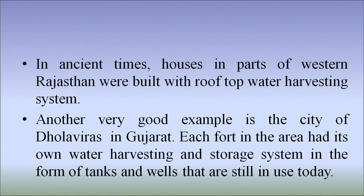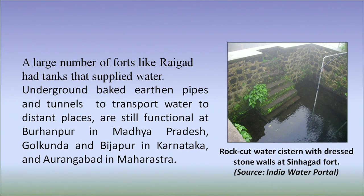In ancient times, houses in parts of western Rajasthan were built with rooftop water harvesting systems. Another very good example is the city of Dholavira in Gujarat. Each fort in the area had its own water harvesting and storage system in the forms of tanks and wells, and they are still being used today. A large number of forts, like Raigarh, had tanks that supplied water. Underground baked earthen pipes and tunnels to transport water to distant places are still functional at Burhanpur in Madhya Pradesh, Golconda and Bijapur in Karnataka, and Aurangabad in Maharashtra.